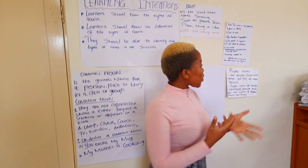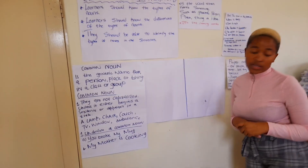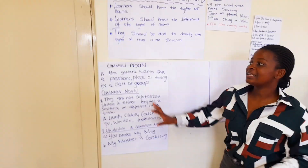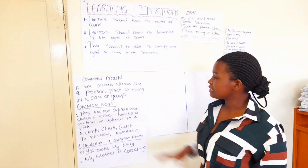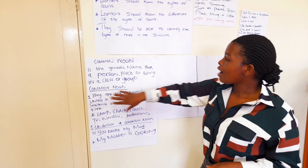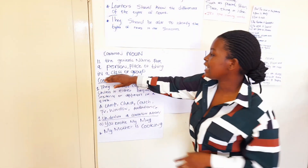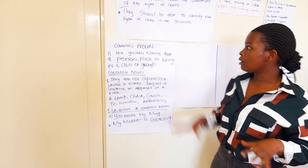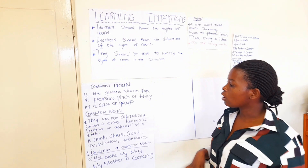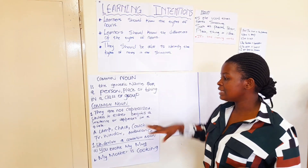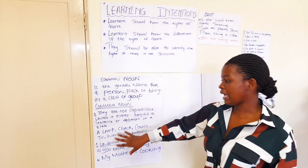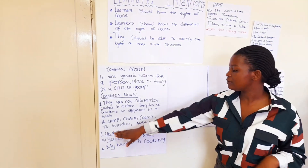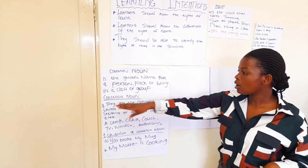Ms. Gonyanya will teach about common nouns. Greetings, my learners. As my colleague said, we're going to learn about common nouns. A common noun is a generic name for a person, a place, a thing, in a class or in a group. Common nouns are not capitalized unless they appear at the beginning of a sentence or in a title. As you can see, examples include a lamp, a chair, a car, a TV, a window — these are all common nouns.